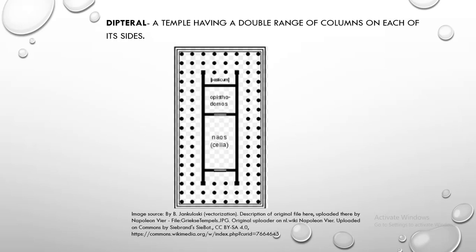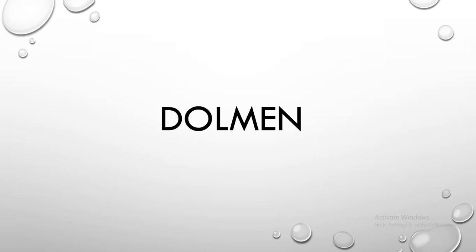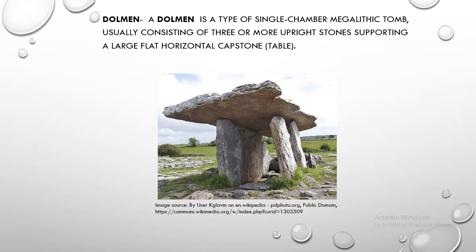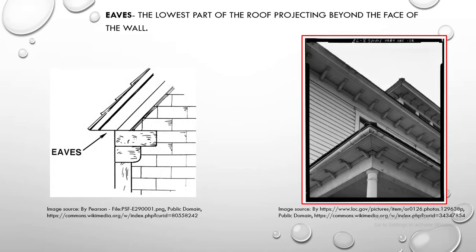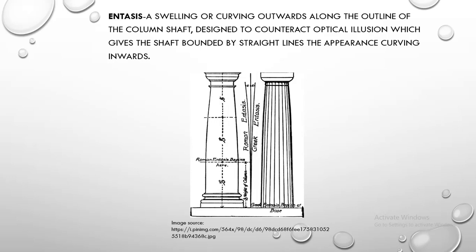Dipteral. Dipteral is a temple having a double range of columns on each of its sides. Dolmen. A dolmen is a type of single-chamber megalithic tomb, usually consisting of three or more upright stones supporting a large flat horizontal capstone or table. Eaves. Eaves are the lowest part of the roof projecting beyond the face of the wall. Entasis. Entasis is a swelling or curving outwards along the outline of the column shaft, designed to counteract the optical illusion which gives the shaft bounded by straight lines the appearance of curving inwards.